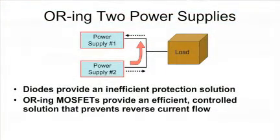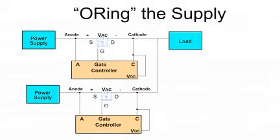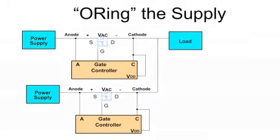Other examples of protection circuitry include ORing FET controllers, which control the flow of current in the forward direction while blocking current from flowing upstream. Together, these FETs and their control ICs are ideal replacements for traditional diodes, but have advantages including dramatically lower power dissipation, status reporting, digital control capabilities, and over-voltage and under-voltage thresholds.